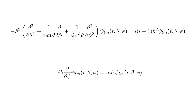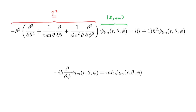The first operator is L squared. We found in that video that it is equal to minus h-bar squared, then the partial derivative with respect to theta twice, then 1 over the tangent of theta multiplying the partial derivative with respect to theta, and then 1 over sin squared of theta multiplying the second partial derivative with respect to phi. The second operator is Lz, and it has a particularly simple form: minus i h-bar times the partial derivative with respect to phi.